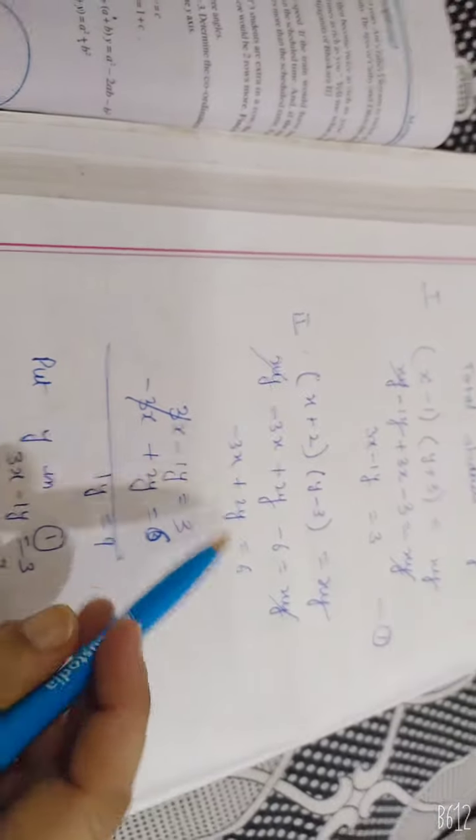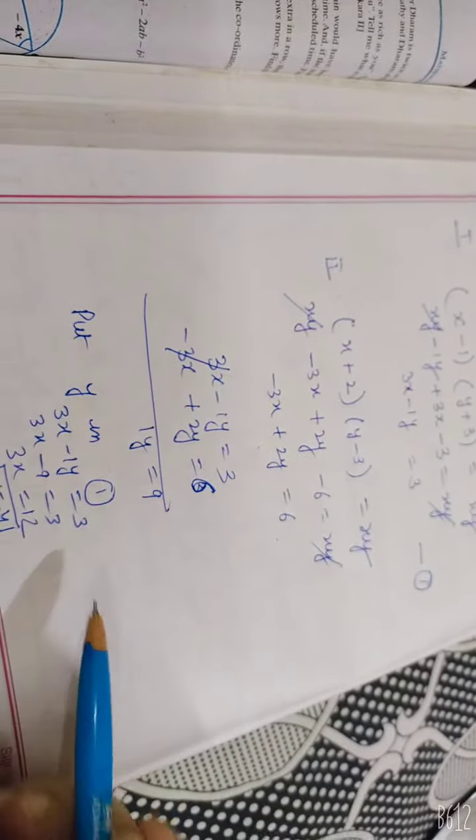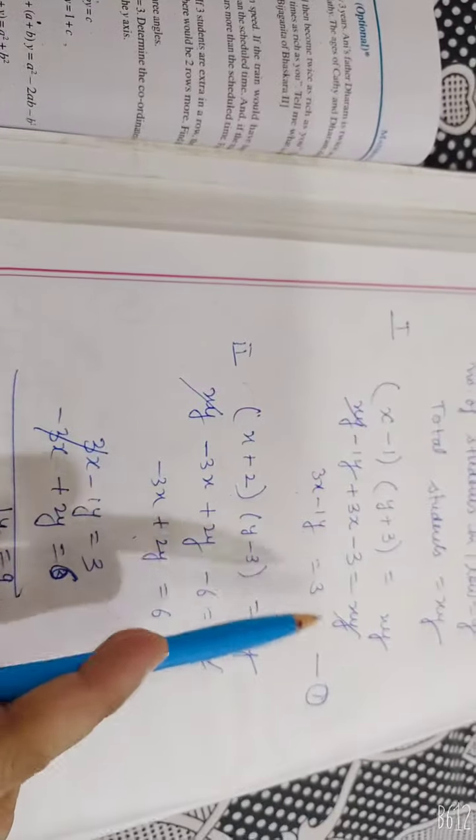I solved these two equations. Elimination method. y is equal to 9. So that is 3x minus 3, and y value is equal to, I put in any equation. So I put the first one.